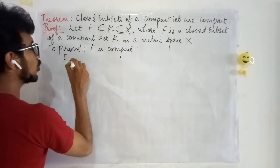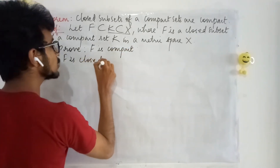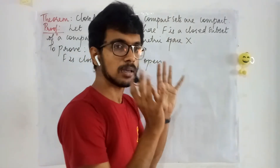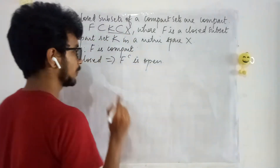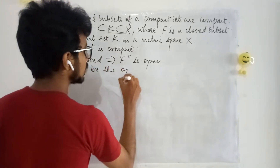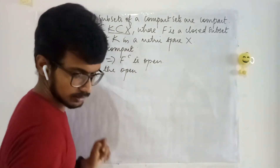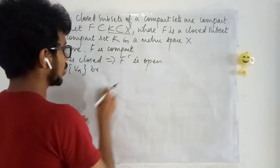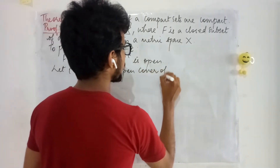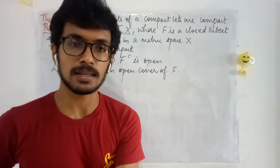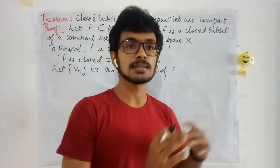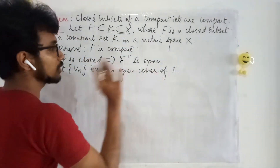F is closed implies F complement is open. Let us denote that as F complement. Now let V_alpha be an open cover of F. Because in order to prove a set is compact we have to take an open cover and show there exists a finite subcover.